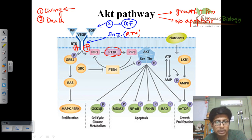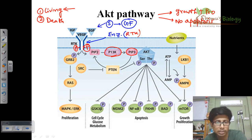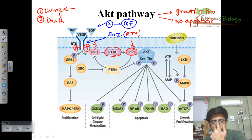Once PI3 kinase produces PIP3 from PIP2, that PIP3 — phosphatidylinositol triphosphate — is now available. Remember, all these phosphatidylinositols are embedded in the membrane. The PIP3 will then activate AKT.